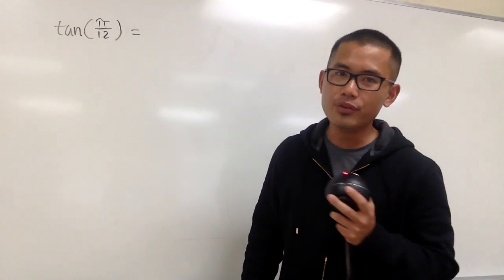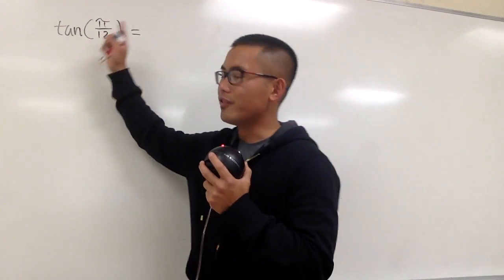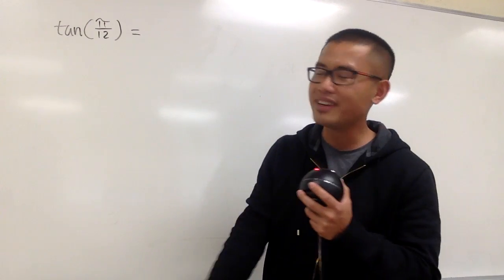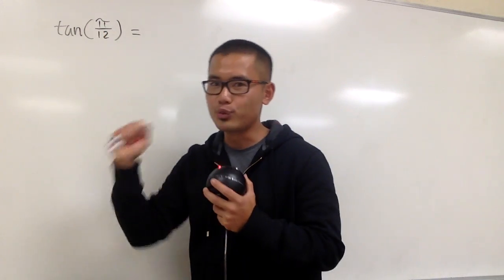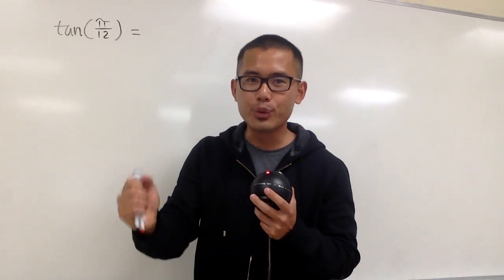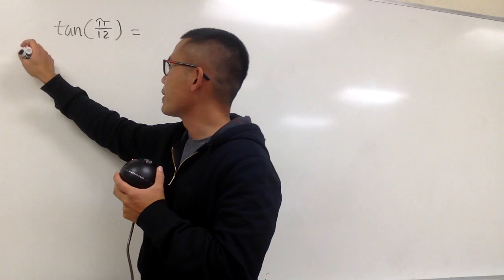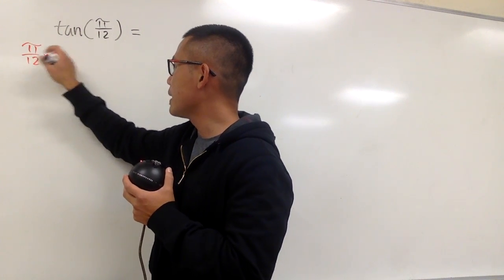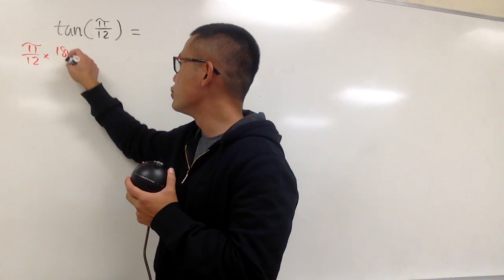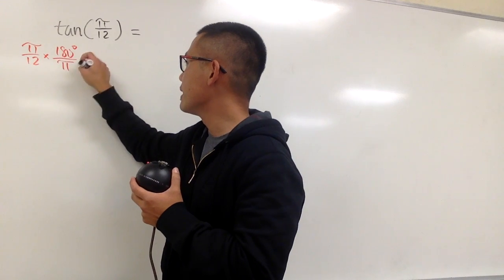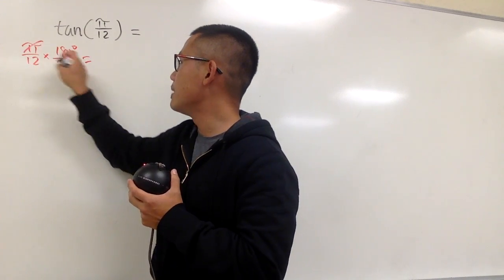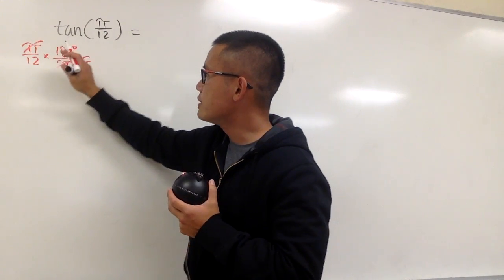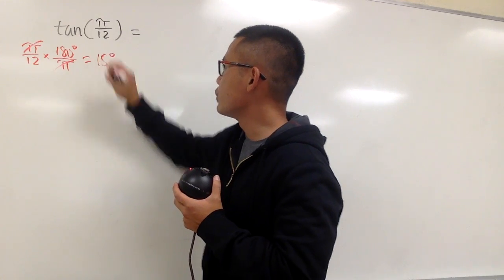We are going to figure out the exact value for tangent of pi over 12. First, it would be a good idea to change pi over 12 from radians to degrees. So we multiply by 180 degrees over pi — pi and pi cancel — and when you reduce 180 degrees over 12, you get 15 degrees.